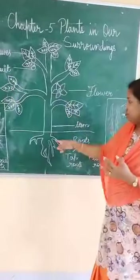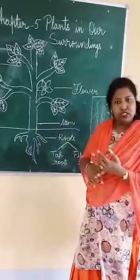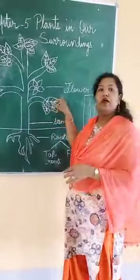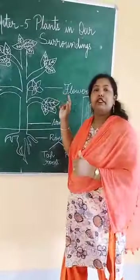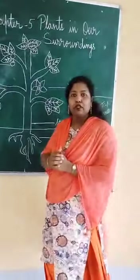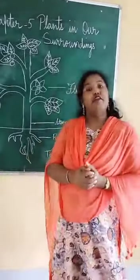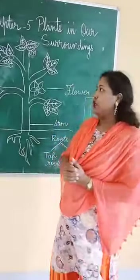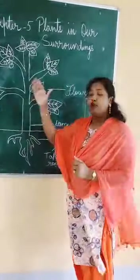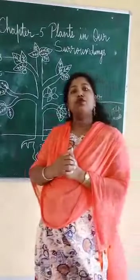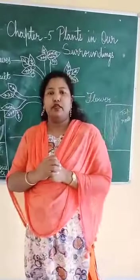So first you have the root, then you have the stem, flower, leaves, bud, and fruits. Now this is the part of a plant. Now we go to the root.